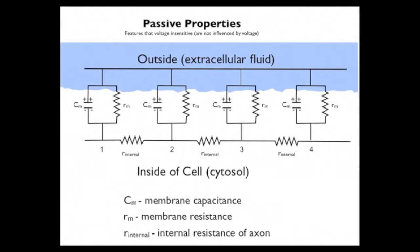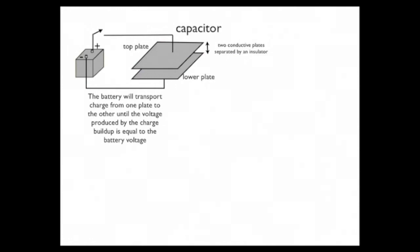Features that are voltage-insensitive are known as passive properties, and those that invoke voltage-gated channels where things change dramatically are called active processes. What we're talking about here are simply the passive properties of an axon.